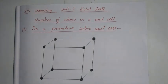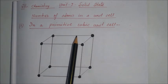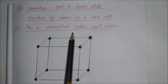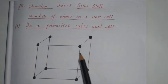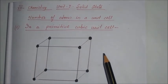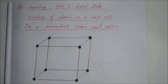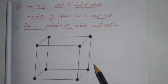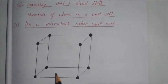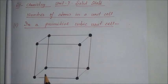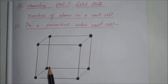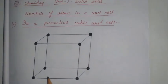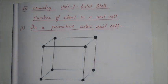First, in the case of a primitive cubic unit cell: in this case, atoms are present only at the corners. The edge lengths are equal, and the axial angles — alpha, beta, and gamma — are also equal and equal to 90 degrees.